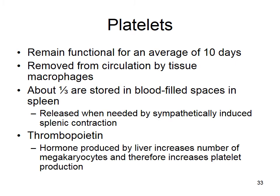If you cut your finger, your fight-or-flight system does not go off and cause splenic contraction. Platelets are really short-lived and get removed by macrophages from all of your tissues. When you have a bleeding event, the sympathetic nervous system causes them to be released. The hormone thrombopoietin gets released by the liver to increase the number of megakaryocytes — so erythropoietin causes increase in red blood cells, and thrombopoietin causes increases in platelets.